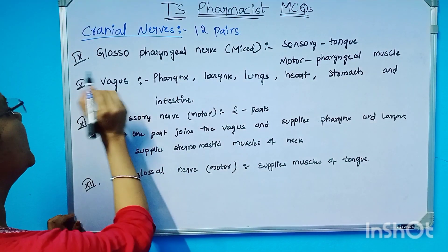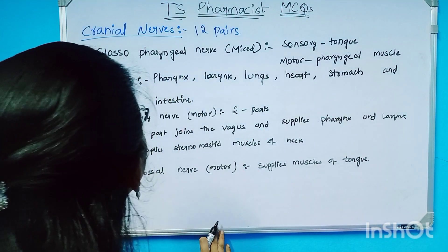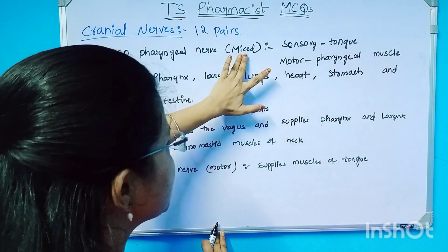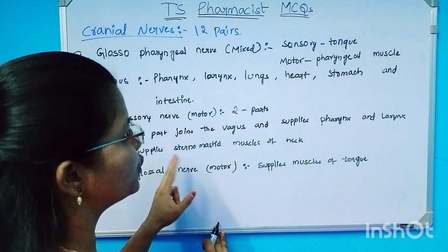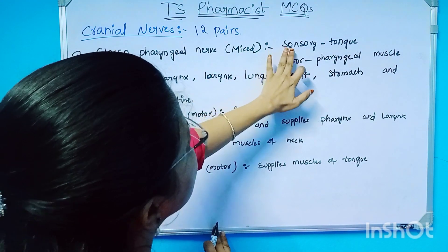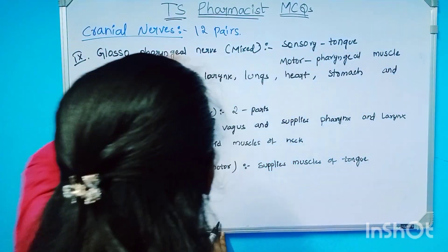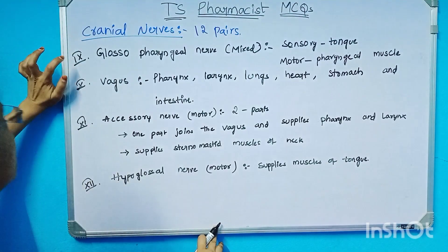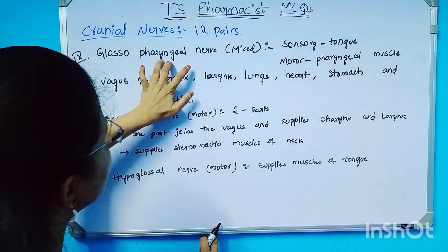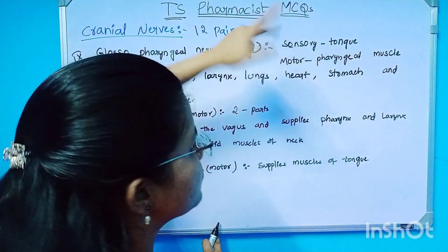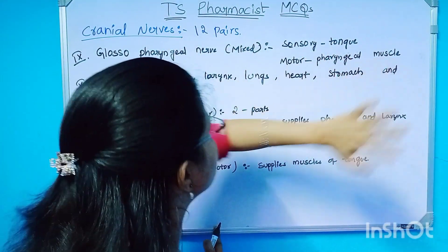The ninth cranial nerve is the glossopharyngeal nerve. It is a mixed type, with both sensory and motor components. The sensory part is in the tongue and the motor part is in the pharyngeal muscle.